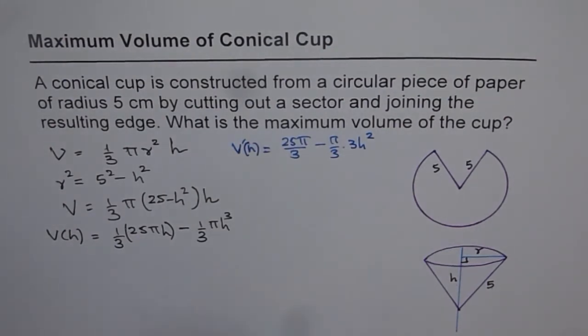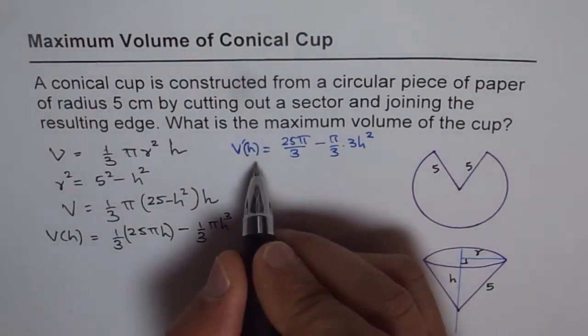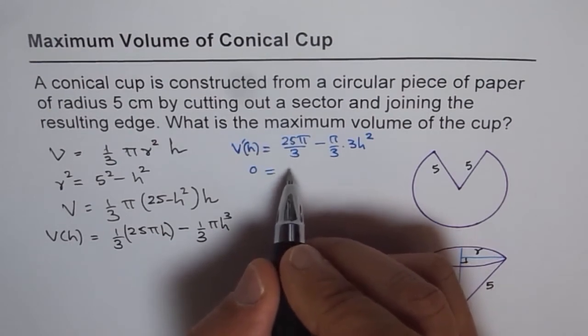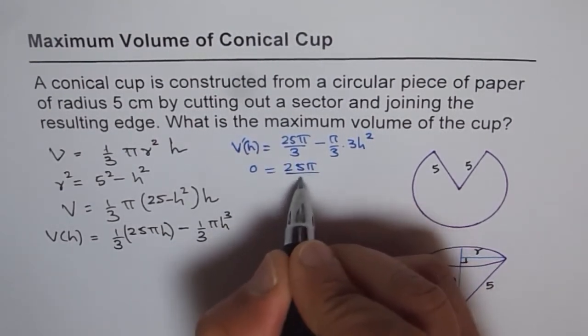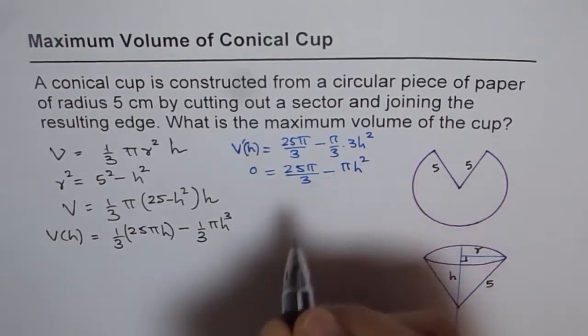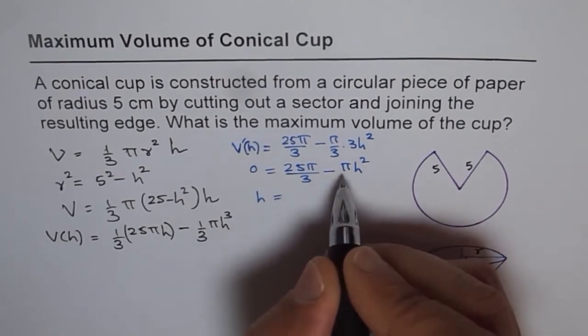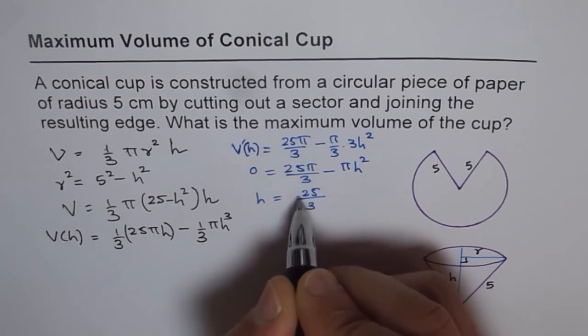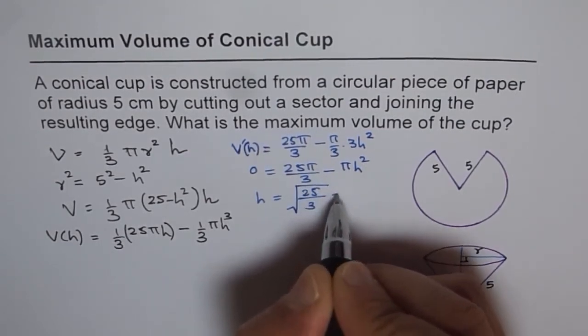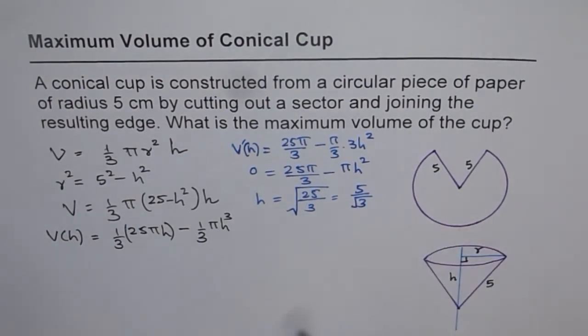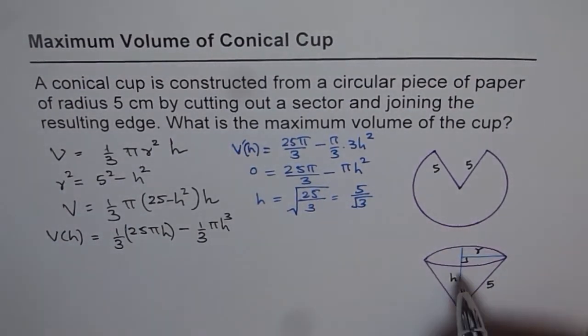Now the critical point is when v dash h is 0. So if v dash h is 0, then we have a critical number. So let's find this critical number, which is 25 pi over 3 minus, 3 and 3 cancel, so you get pi h square. So that gives us a value of h as equals to 25 over 3 square root, which is 5 over square root of 3. So this is the height for which we get maximum volume.